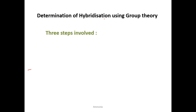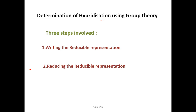In today's lecture we are going to discuss the determination of hybridization using group theory for the molecule of ammonia. There are three steps involved. The first step is writing the reducible representation. The second step is reducing the reducible representation using the reduction formula. The third step is assigning the hybridization based on the set of rules.